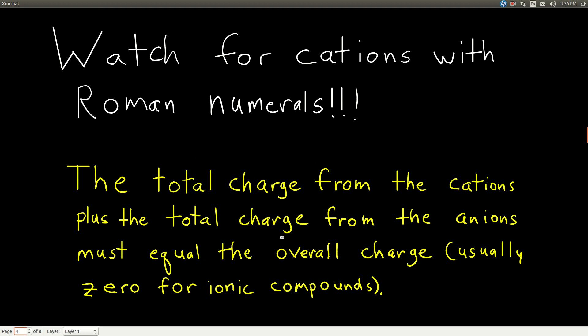Watch out for cations with Roman numerals — that trips people up all the time. Make sure you always check, when doing the nomenclature of a binary ionic compound, whether the metal is supposed to have a Roman numeral or not. The other key rule is that the total positive charge from the cations plus the total charge from the anions must equal zero — we have to have the same amount of positive charge as negative charge in an ionic compound.